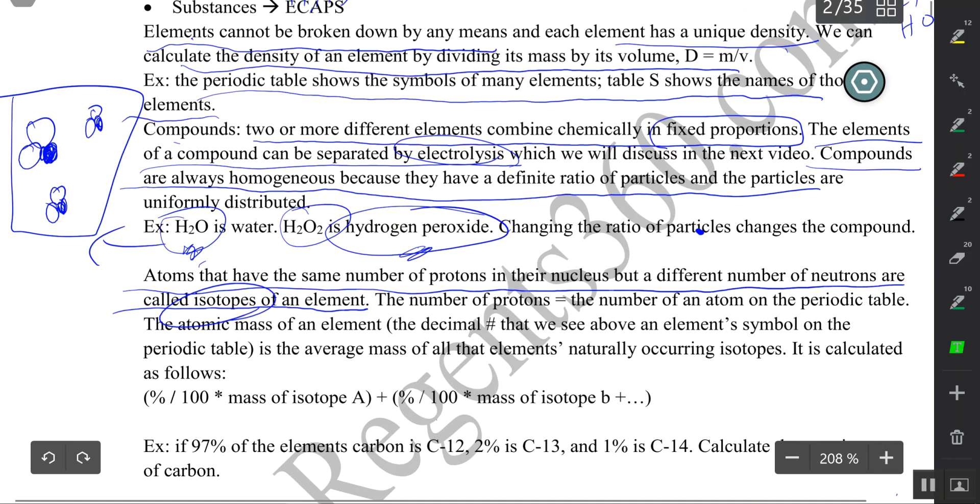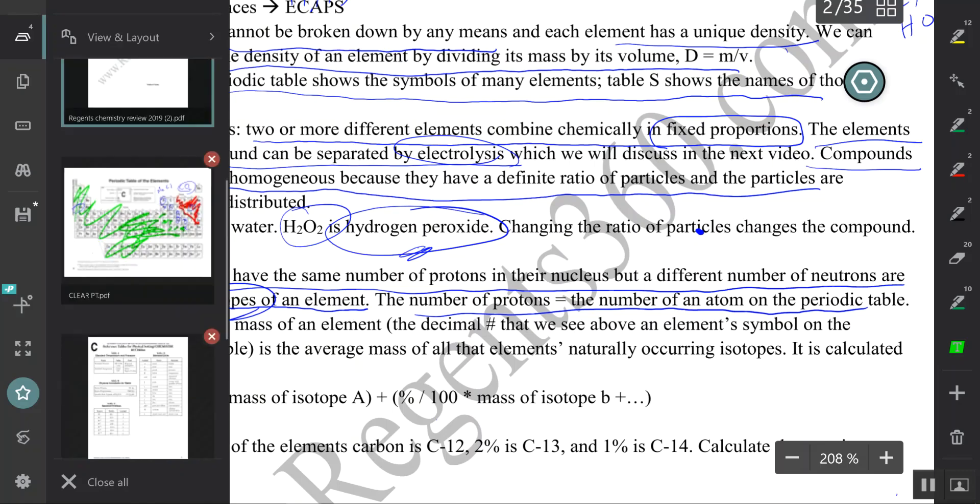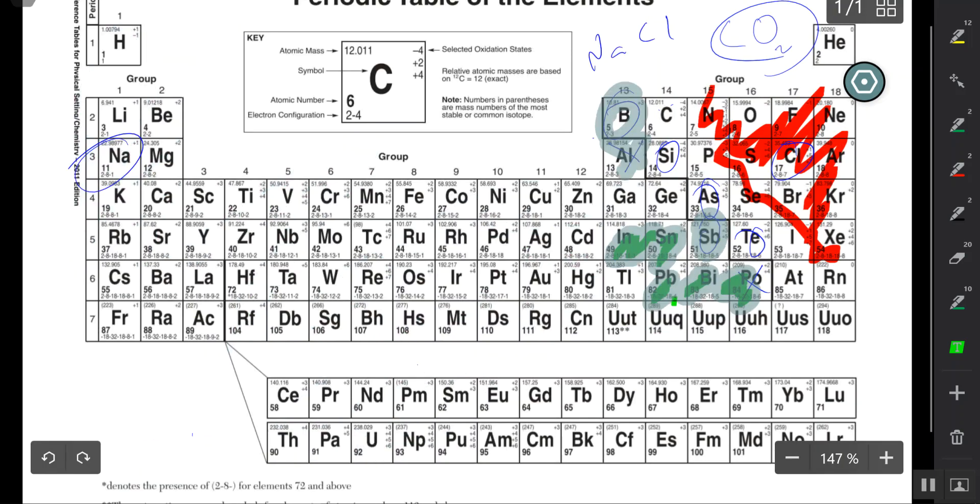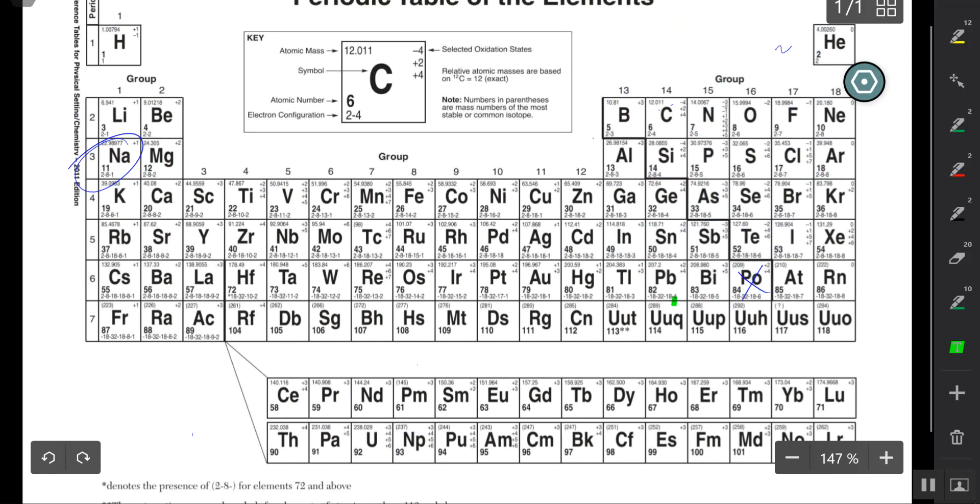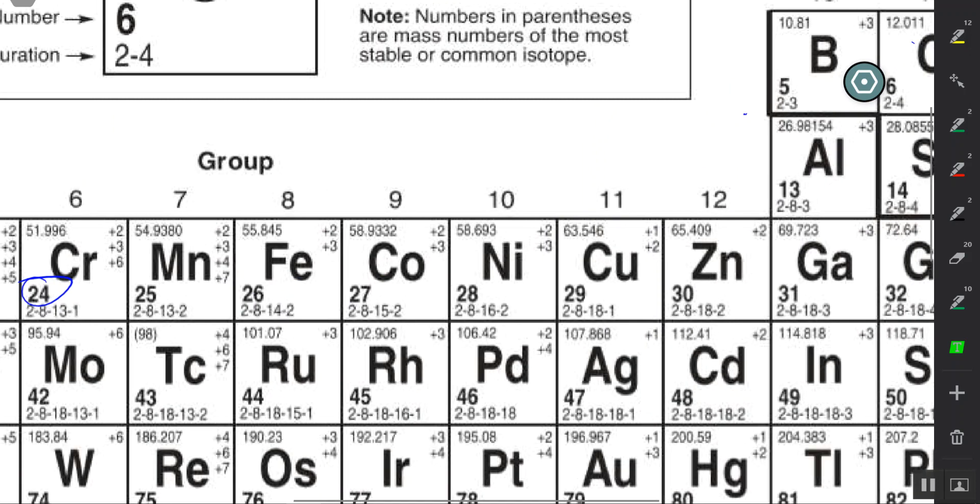Isotopes. Let's take a look at the periodic table. The number of protons equals the atomic number of the atom. Chromium is number 24, it has 24 protons inside its nucleus. Nickel is number 28, it has 28 protons. This is the mass of the atom in decimal form. The mass of the atom is the average mass of all that element's isotopes.